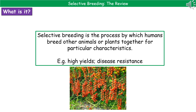Welcome to our review on selective breeding. The first thing we need to know is: what is selective breeding? Quite simply, selective breeding is the process by which humans breed other animals or plants together for particular characteristics. A couple of key examples might be for high yields or for disease resistance.